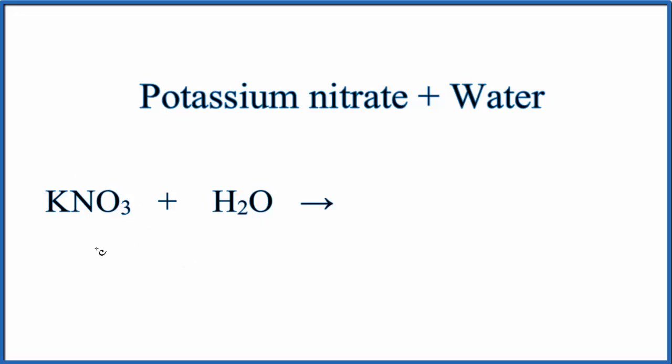When we look at KNO3, we see we have a metal, potassium, and then this NO3 is called the nitrate ion. It's a polyatomic ion.